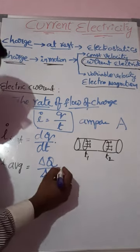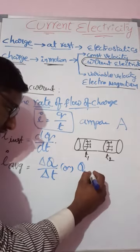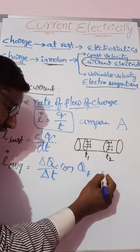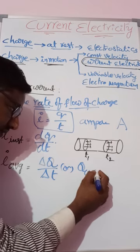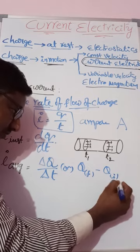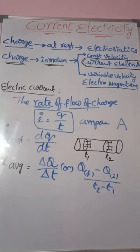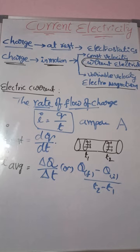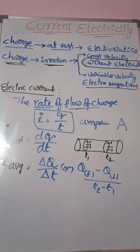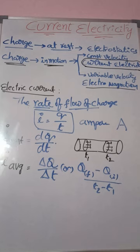I_average = ΔQ/ΔT, which can also be written as (Q_final − Q_initial) / (t2 − t1), or simply (Q2 − Q1) / (t2 − t1). The average current is the total amount of charge passing through a conductor in a time interval.